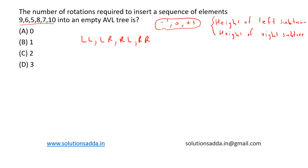We have to perform one of these rotations to balance it again. Now let's try to draw it. First we insert 9. The balancing factor of this node is 0 because there is no left or right subtree. Now we insert 6. The balancing factor of 9 becomes 1, that is height of left subtree (1) minus height of right subtree (0), so the balancing factor is plus 1. Node 6 has balancing factor 0 because it has no left or right nodes.